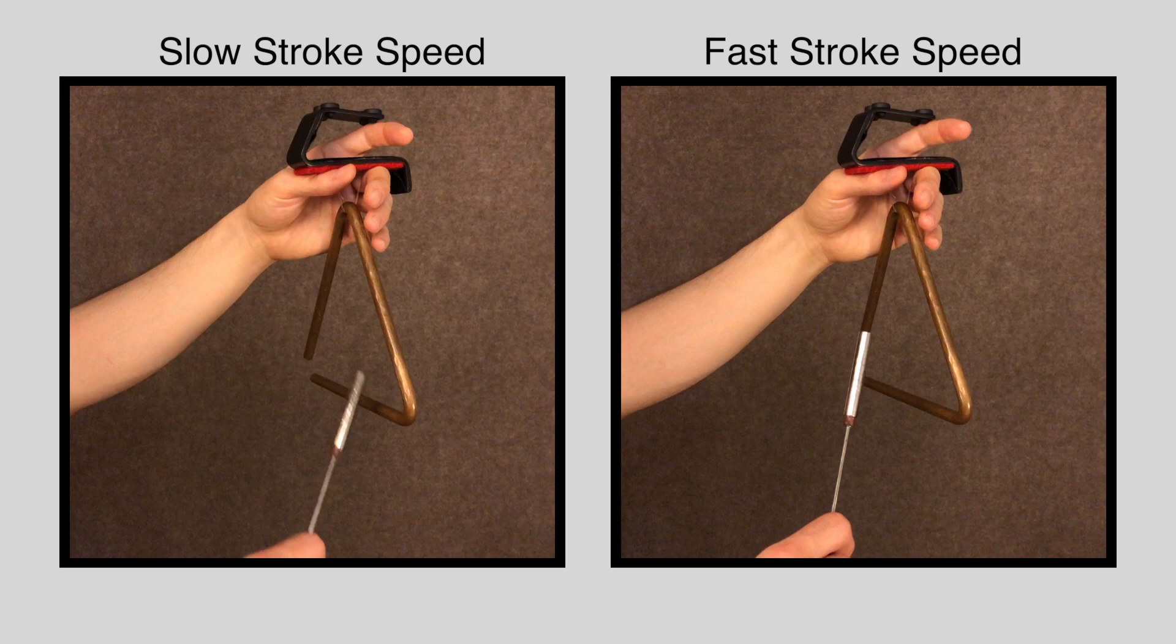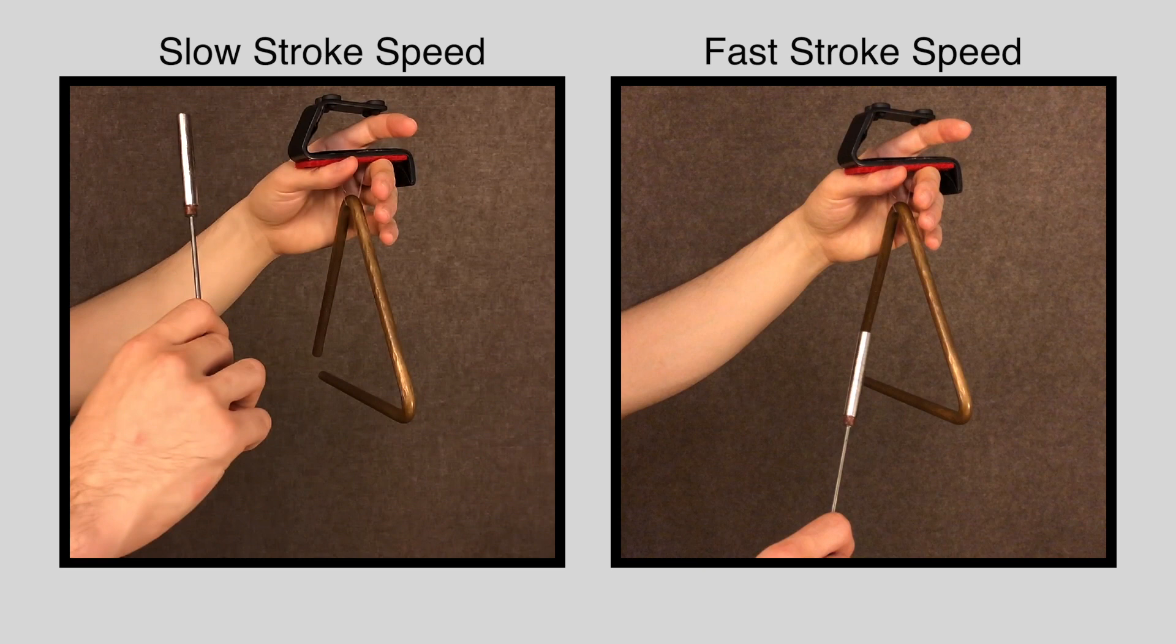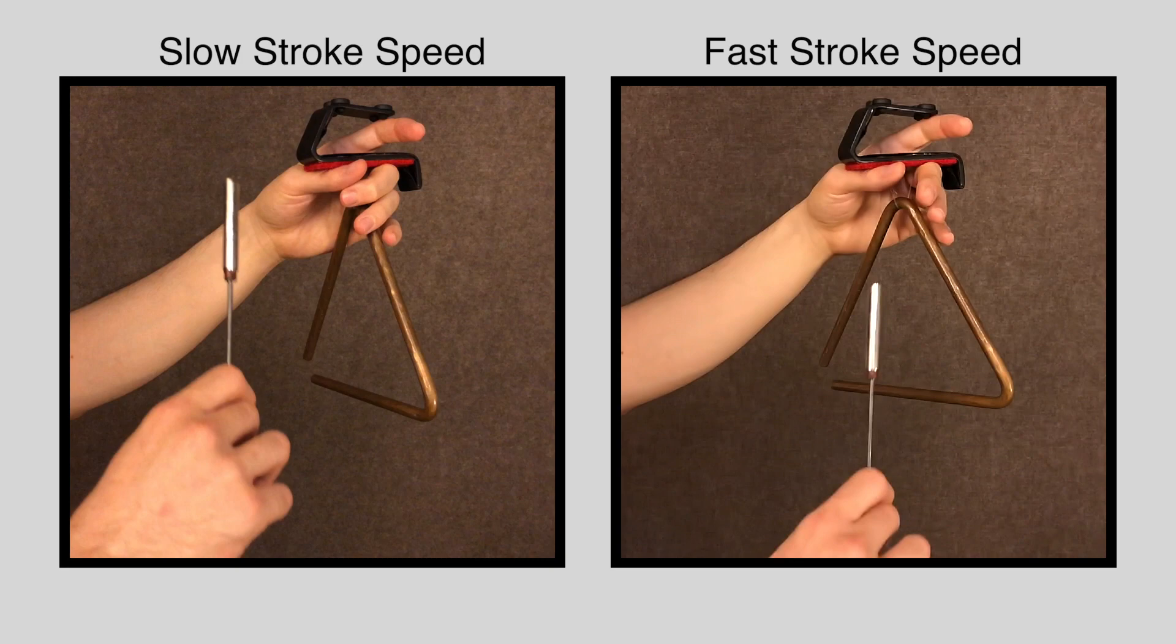If I hit it with a slower stroke, the beater itself actually rests on the surface of the triangle longer, muting some of the frequencies and creating a more mellow sound. And vice versa, if I use a quicker stroke.